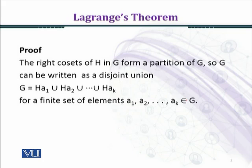Let's prove the theorem. The right cosets of H in G form a partition of G. So G can be written as G equals Ha₁ union Ha₂ union ... union Haₖ. Here, a₁, a₂, ..., aₖ are elements of the group G, and we form right cosets from these elements.